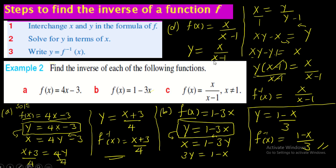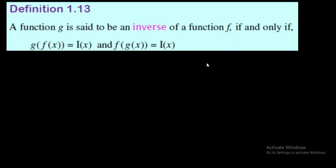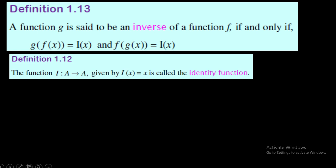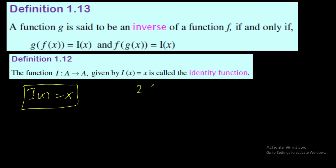Now there is one important definition. A function g is said to be an inverse of function f if and only if the composition of g with f, or f with g, gives the identity function. The identity function is defined as I(x) = x.